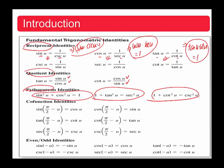The next identity is the cofunction identity. Sine of (π/2 minus u) equals cosine u. When these two angles are complementary — that is, (π/2 minus u) plus u equals π/2 — the sine of one angle equals the cosine of the complementary angle. Using complementary angles, you can switch sine to cosine, cosine to sine, tangent to cotangent, cotangent to tangent, secant to cosecant, and cosecant to secant.